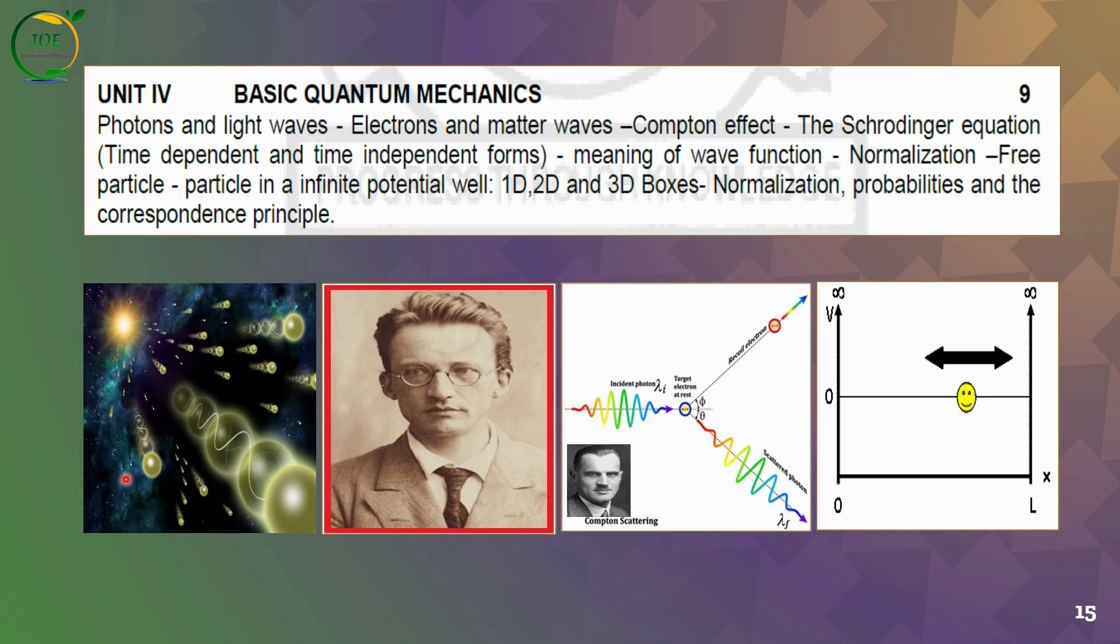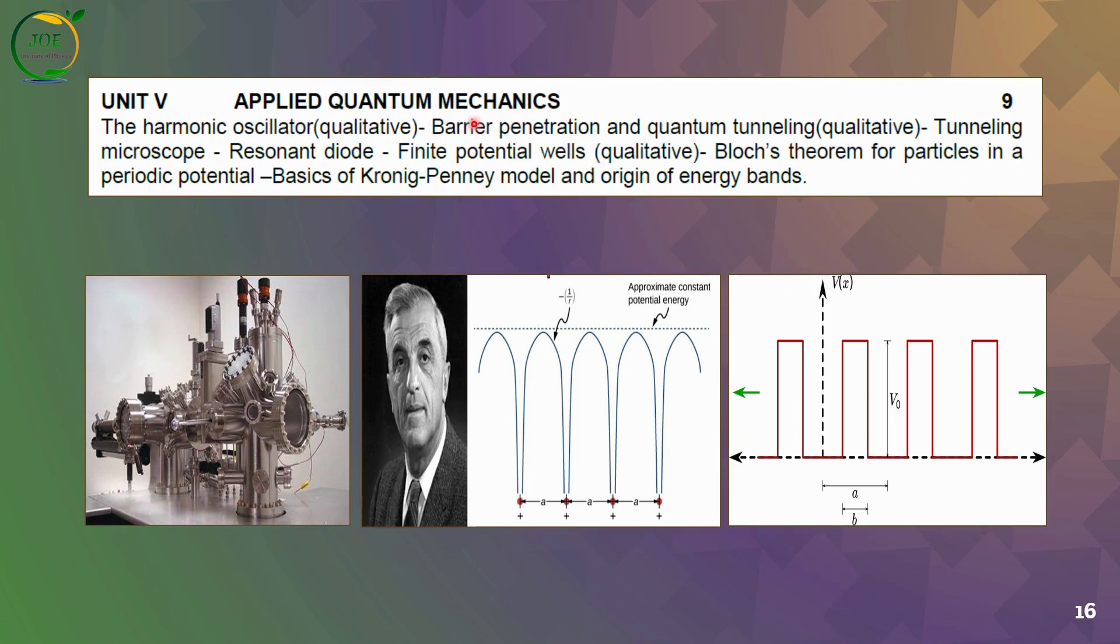Unit 4 is quantum mechanics. Light has dual nature, both wave nature and particle nature. Energy exists as photons. The Compton effect describes when a photon scatters an electron, changing the wavelength. The Scanning Tunneling Microscope can image surfaces at the atomic level.